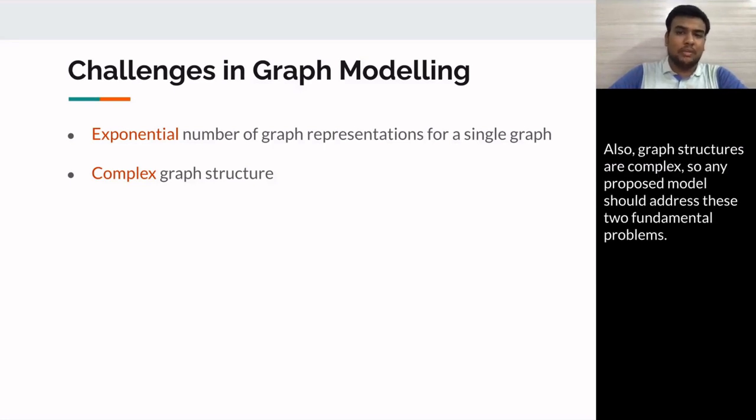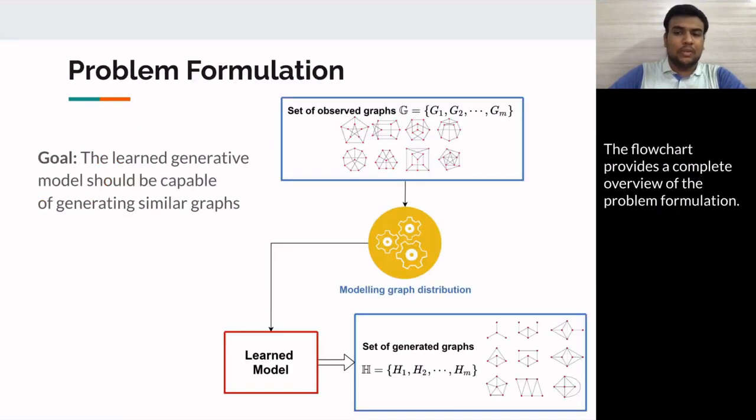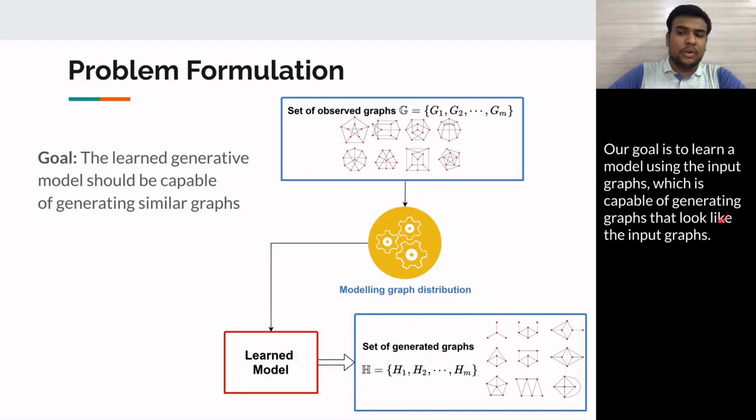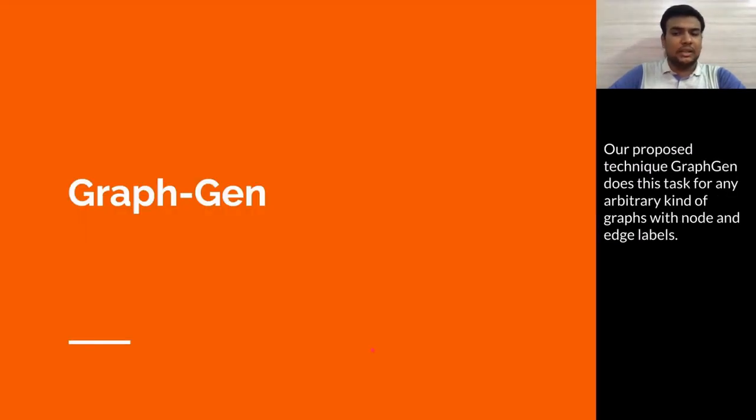The flowchart provides a complete overview of the problem formulation. Our goal is to learn a model using the input graphs which is capable of generating graphs that look like the input graphs. Our proposed technique GraphGen does this task for any arbitrary kind of graphs with node and edge labels.